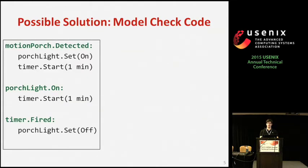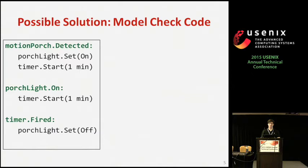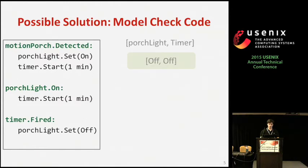One option is to test the script systematically using a technique called model checking. We don't necessarily want the user to have to model their script as a state machine and keep it up to date with changes, so we can instead build it dynamically. Suppose we have a script with three triggers: one for motion, one for the porch light being turned on, and one for a timer firing. The intended behavior is to keep the light on for one minute after motion occurs or the porch light is switched on. In testing the system, we don't want to actually modify the states of the actual devices, so we create a virtualized copy by creating a model of the controller and the underlying devices.